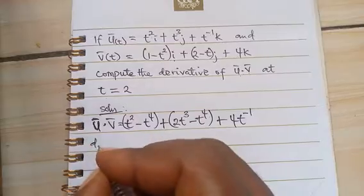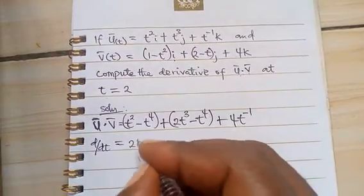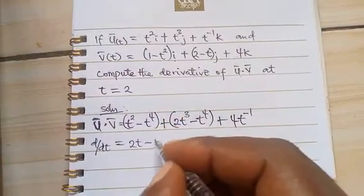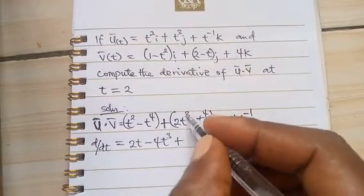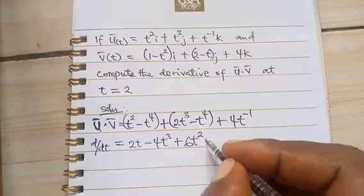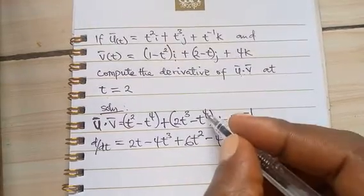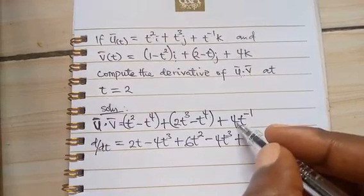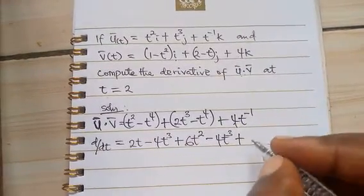Okay so for us to now differentiate with respect to t we have t² times 1 is 2. We have minus 4 times 1 is 4, 4 minus 1 is 3. Plus 3 times 2, 4 times 1 is 4, t^4 minus 1 is 3. Plus now minus 1 times this is going to give minus 1 times 4 is going to give us minus 4.